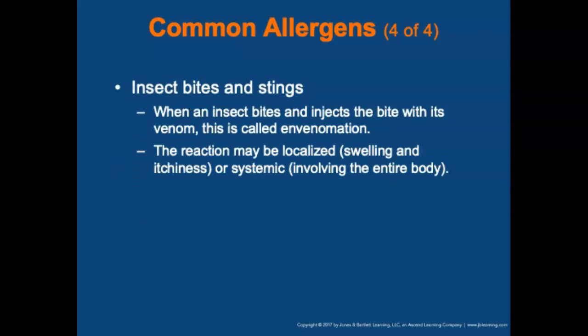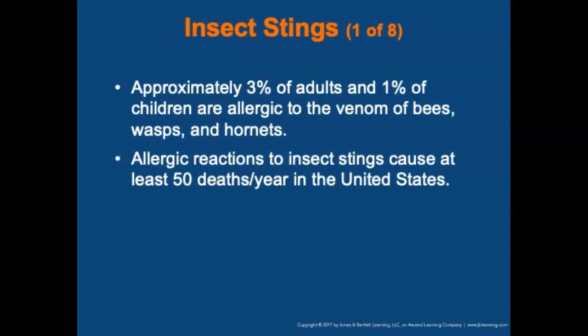The fifth most common allergen is insect bites and stings. When an insect bites or stings a person, the act of injecting venom is called envenomation. The reaction may be localized — causing swelling and itching at the site — or it may be severe and systemic, such as anaphylaxis. Approximately 3% of adults and 1% of children are allergic to venom of bees, wasps, and hornets. Allergic reactions to insect stings account for at least 50 deaths in the United States per year, and in about half of these deaths, the victim had never experienced a reaction to a prior sting.